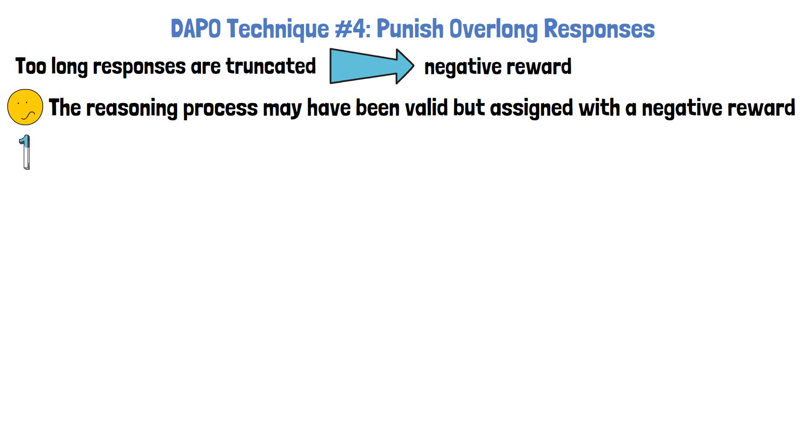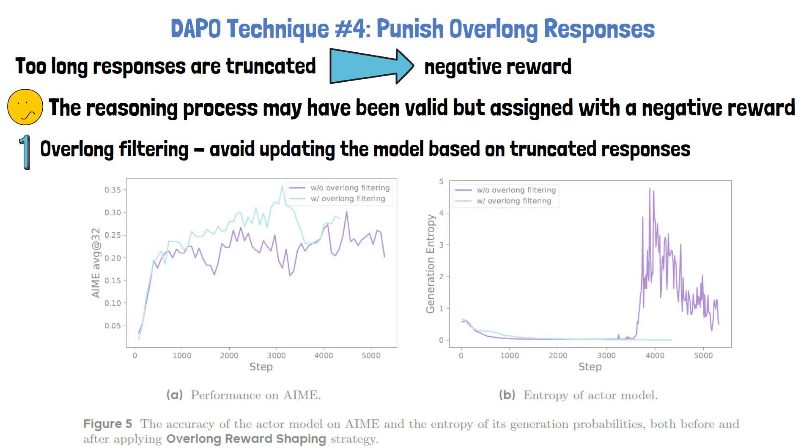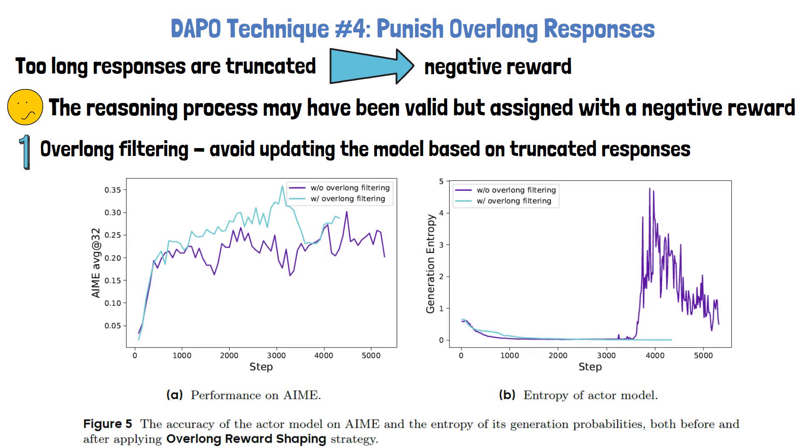To address this, the researchers explore two approaches. The first is called overlong filtering, which avoids updating the model based on truncated responses. The following figure shows the contribution of this approach. On the left, we see it helps to improve accuracy, and on the right, we see it improves training stability, avoiding a jump in entropy.